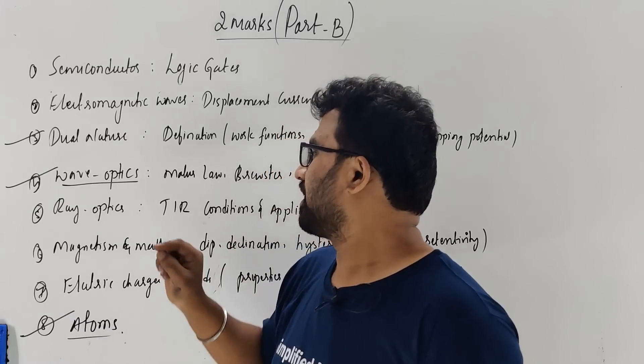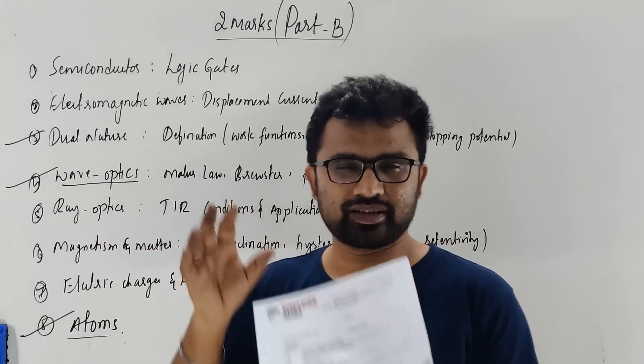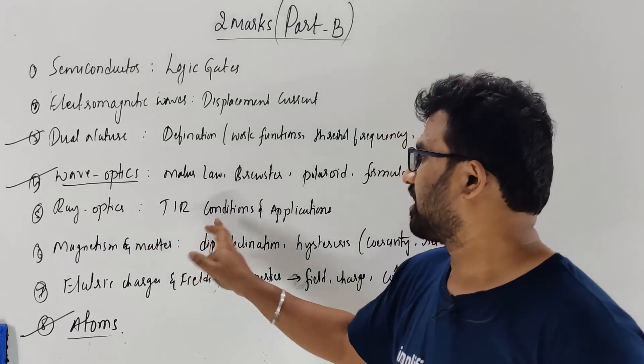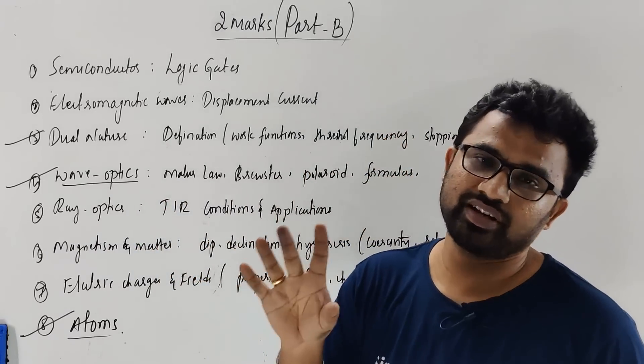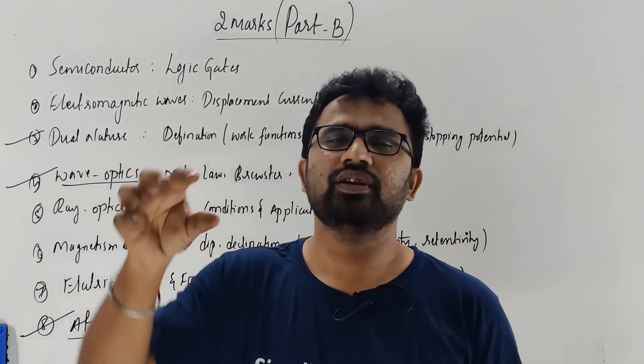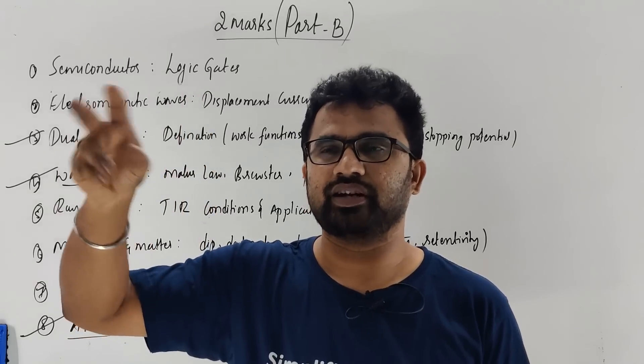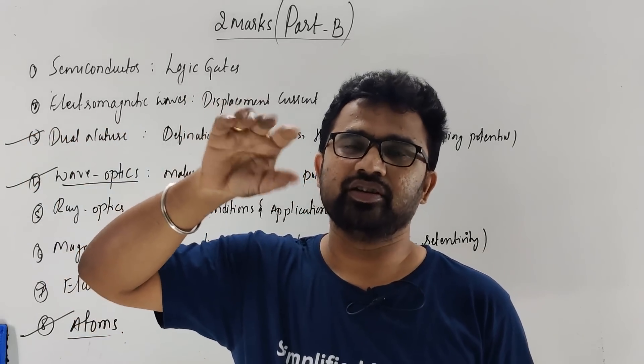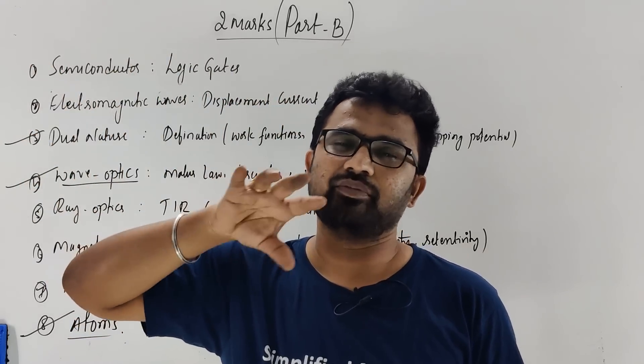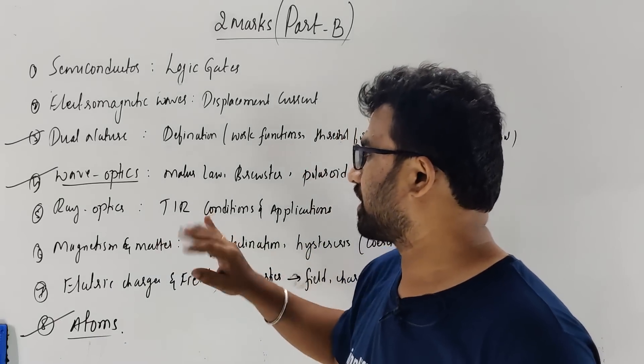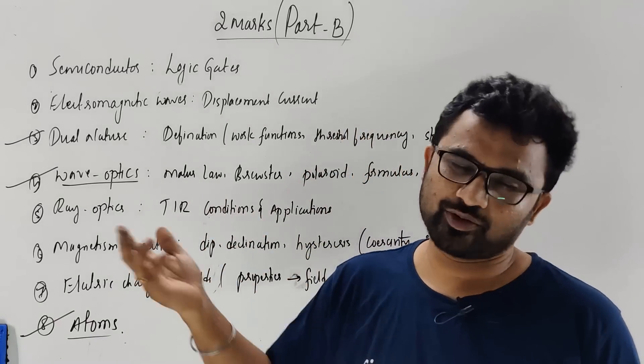Ray optics. Properties: TIR conditions, conditions for TIR, applications of TIR. Ray diagram: telescope, simple microscope, compound microscope, telescope. Two ray diagrams. If you just have to know that diagram, unless the last note. Mostly two conditions. They can give three marks, three applications. Three marks: conditions.